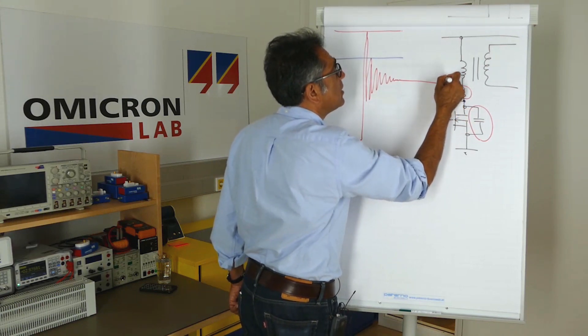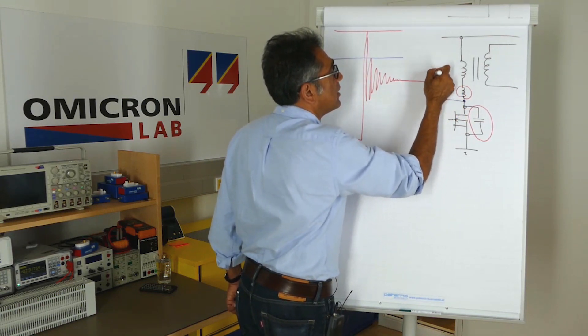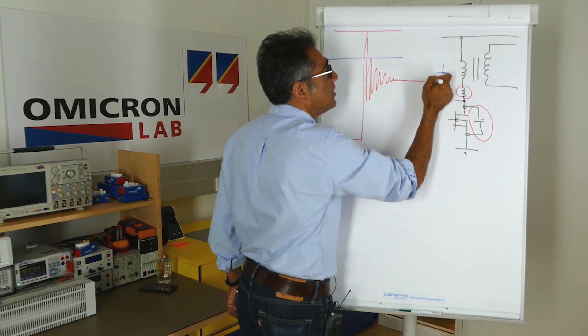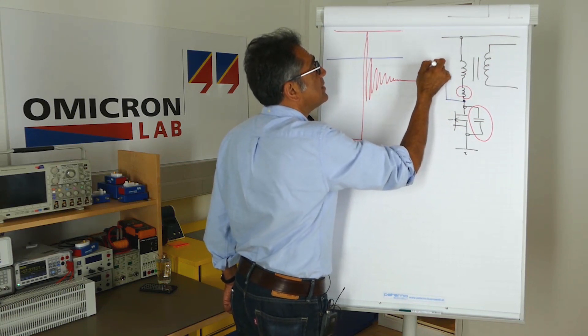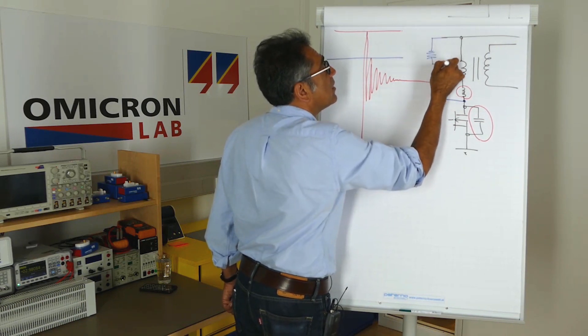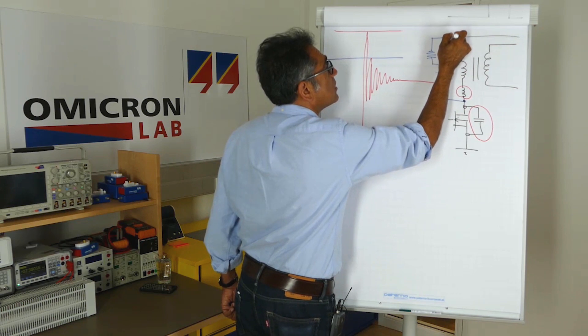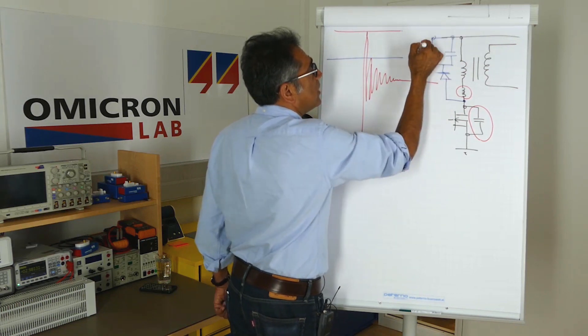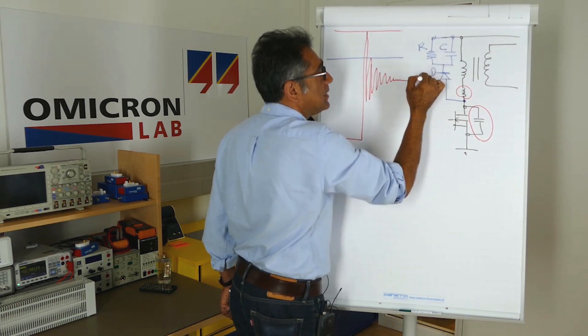So the RCD clamp circuit will look something like this. You've got a diode to start with, and then you're going to have to dissipate the energy somehow, so then you've got a resistor. And then you need to damp it, and therefore you've got a clamp. That's why it's called an RCD clamp.